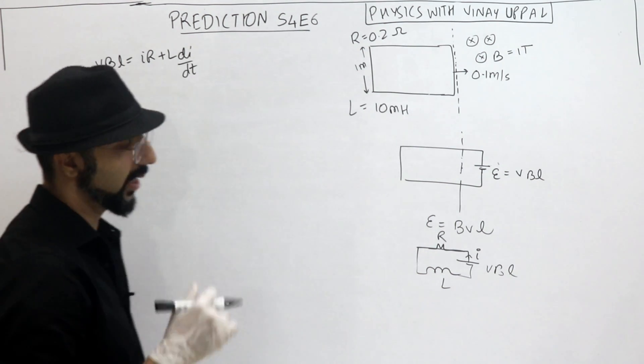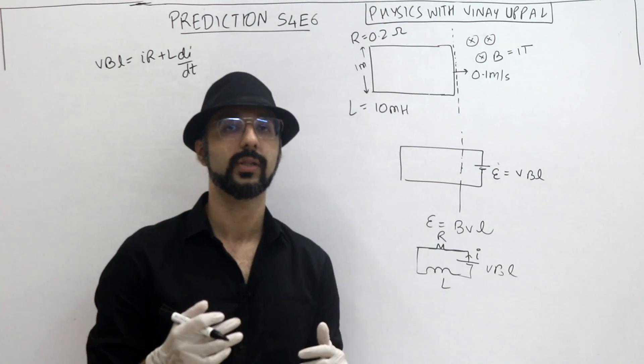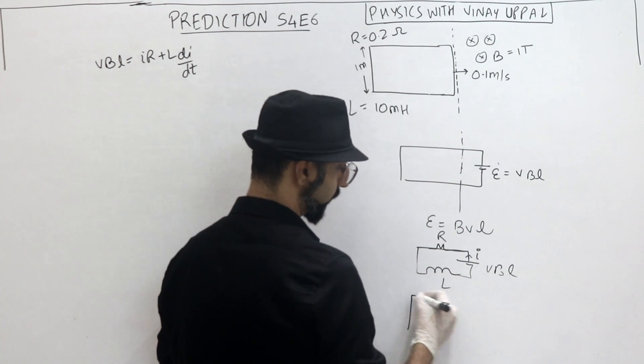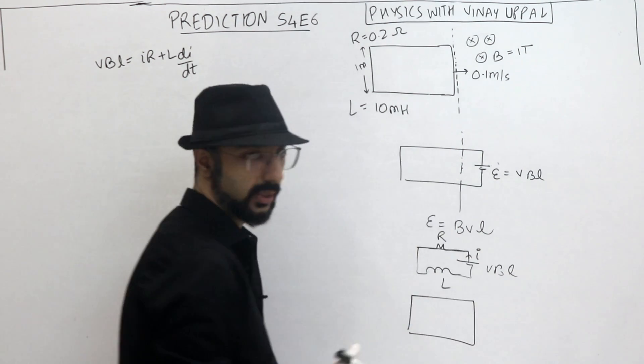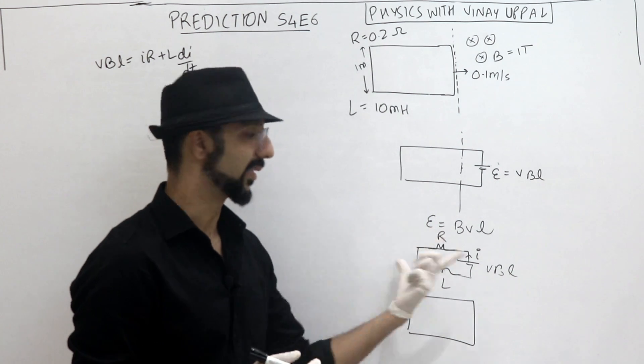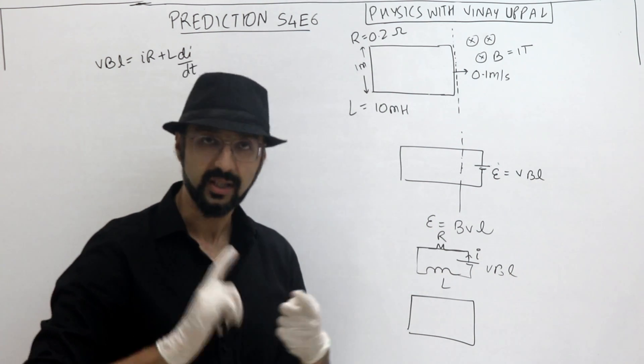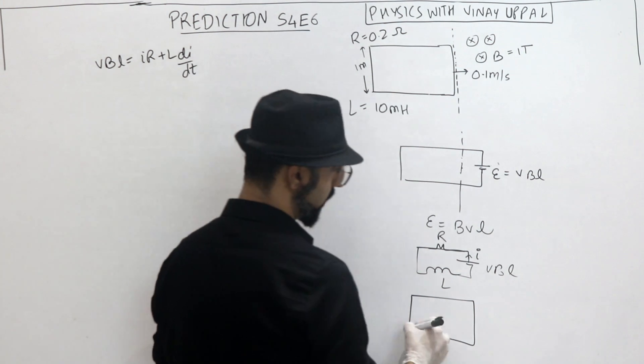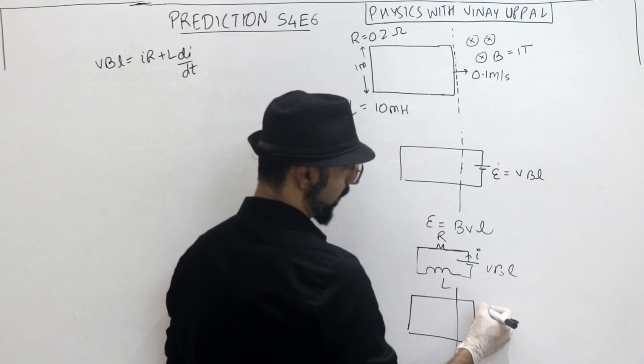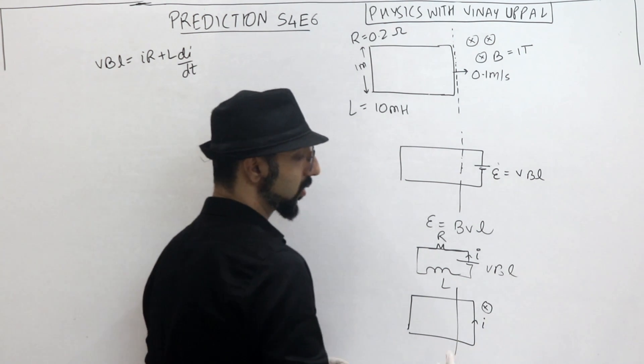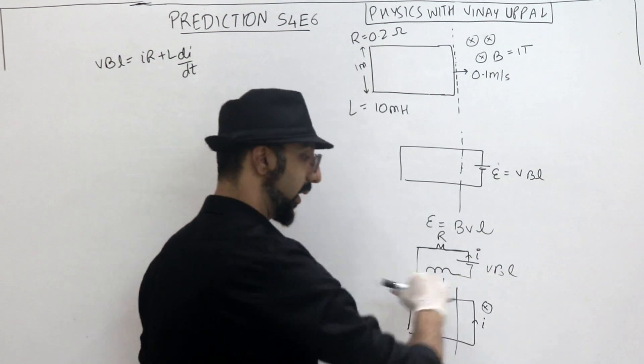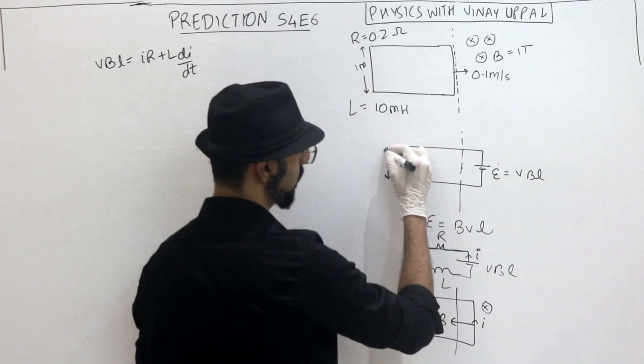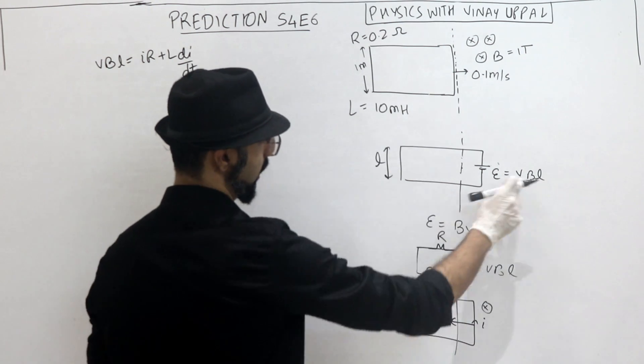Now, do I have another equation relating velocity and current? Yes, because I can write the force equation. So this is all standard things. This is exactly what we do in such questions. We write a circuit equation and we write a force equation. So force equation, current is this way. So here, magnetic field, ILB. L cross B. So leftward, I, L, B force, where this length is L. This length L here.